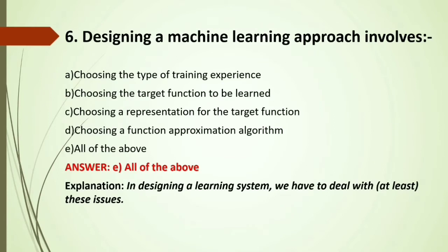MCQ: Designing a machine learning process approach involves — A) choosing the type of training experience; B) choosing the target function to be learned; C) choosing a representation for the target function; D) choosing a function approximation algorithm; E) All of the above. As studied under the design of machine learning, the four issues are training experience, target function, learned function, and learning algorithms — all present in options A through D. Answer: All of the above.